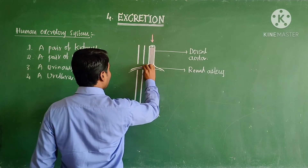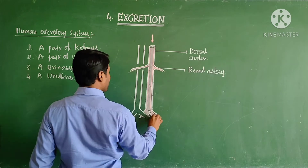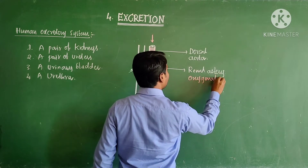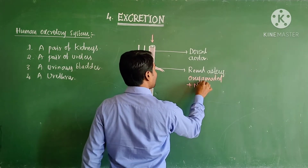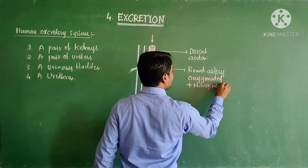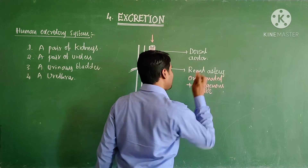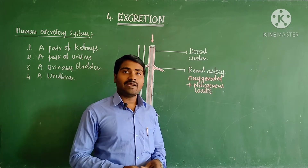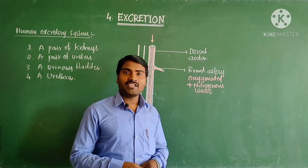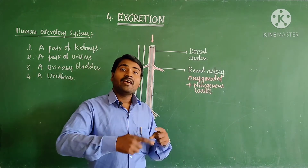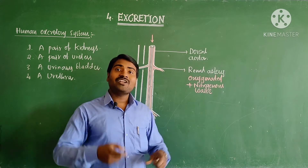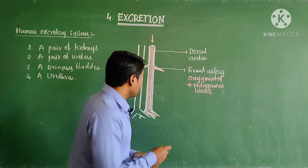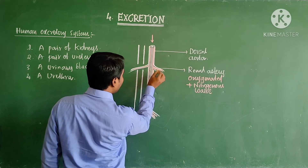The blood coming into the dorsal aorta and renal artery is oxygenated blood that is loaded with nitrogenous waste materials. This blood enters into the kidney where filtration takes place. Then it becomes deoxygenated blood without nitrogenous waste materials, and that is collected by veins.